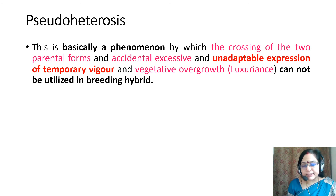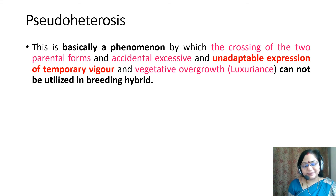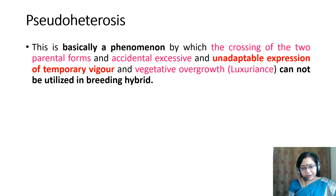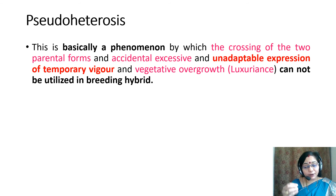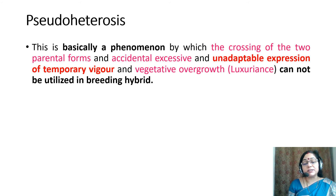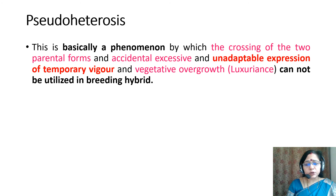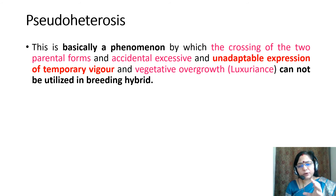Pseudo-heterosis is basically a phenomenon by which crossing of two parent forms produces an accidental, excessive, and non-repeatable expression of temporary vigor. In pseudo-heterosis, the expression occurs in the F1 generation but cannot be transmitted to further generations and cannot be utilized in breeding programs. As the vigor is temporary — it may be luxuriant growth or vegetative outgrowth — it is not fit or adaptable. It is just a pathological heterosis appearing in this generation but not heritable.